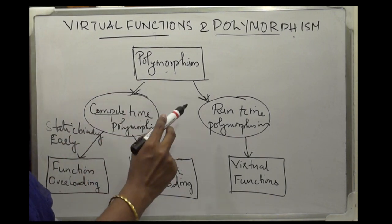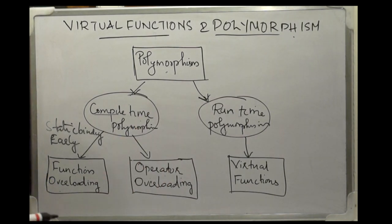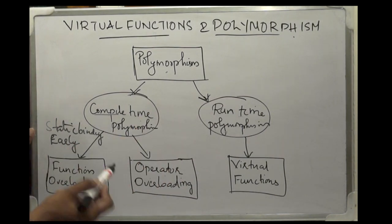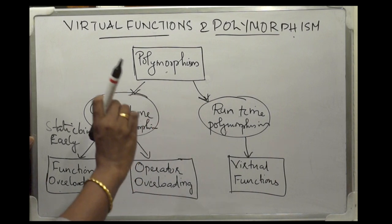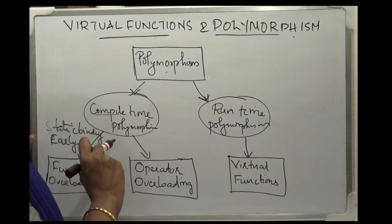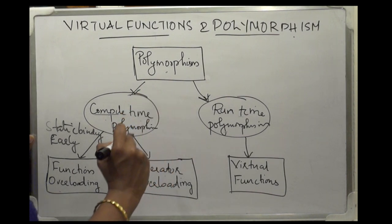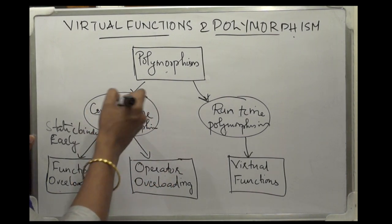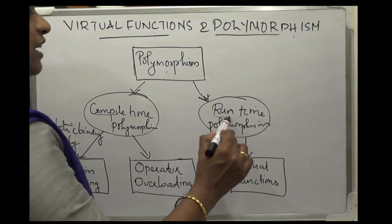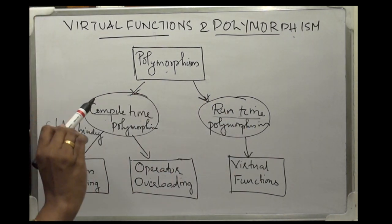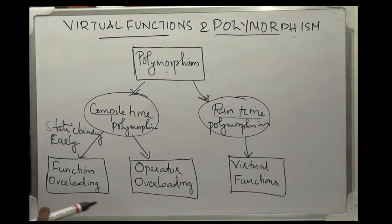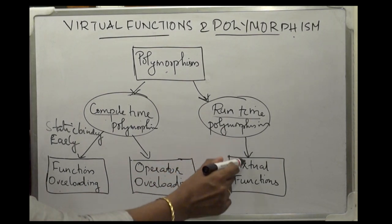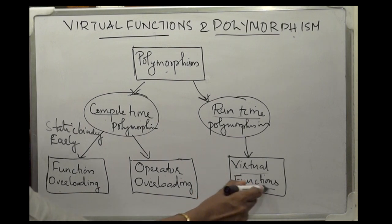Another category is runtime polymorphism, where the function to be called is not known at compile time. The function to be executed is determined only during the runtime of a program. This is called runtime polymorphism, and the example of runtime polymorphism is virtual functions.